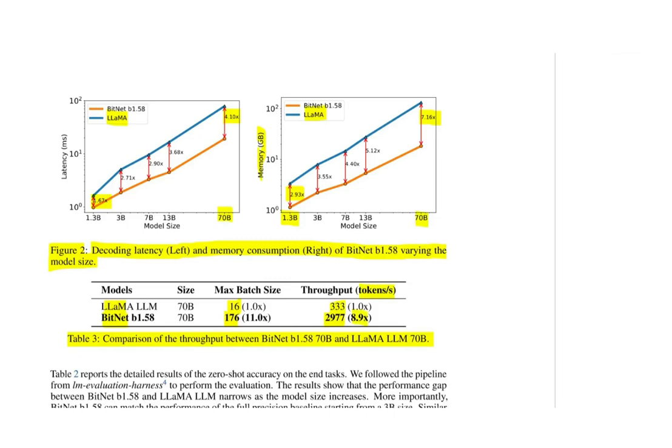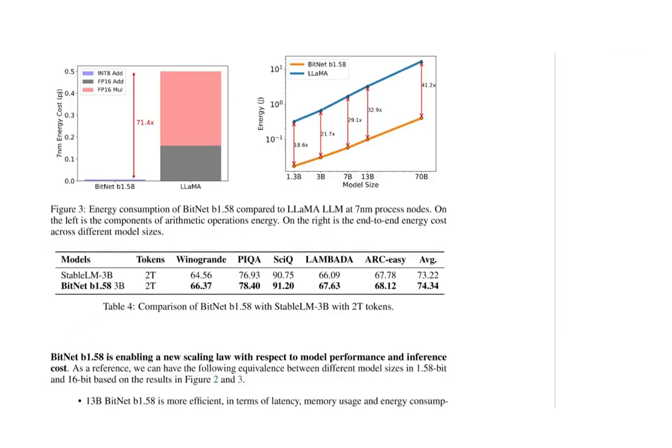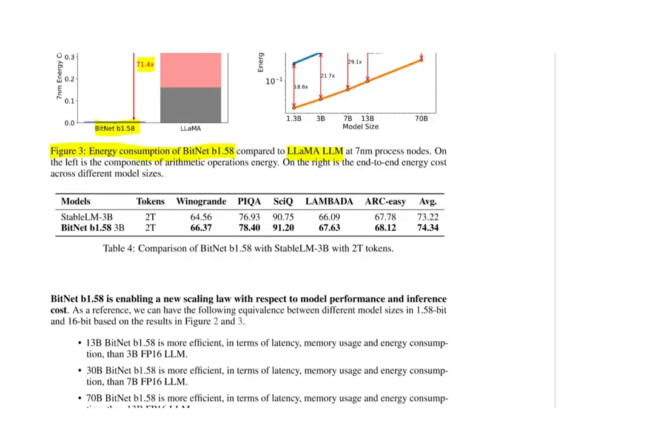The authors also look at the energy consumption of BitNet b1.58 compared to LLaMA at 7 nanometer process nodes. We can see that there is a huge energy consumption difference between the two of 71.4 times. Why? Because BitNet uses the integer 8 addition while LLaMA uses the floating point 16 addition together with the floating point 16 multiplication which consumes much more energy.